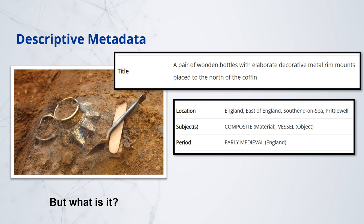Descriptive metadata may also be subjective, where the content or narrative is dependent on interpretation. Regardless, it is the key metadata type for resource discovery, as it describes the content of a resource, and it's what most often connects the user to the objects they are interested in. It is what subject-based searchers use to find data — the theme, the topic, the type of content.